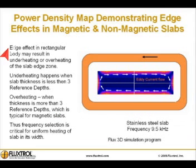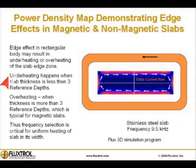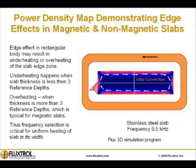Power density map demonstrating edge effects in magnetic and non-magnetic slabs. Edge effect in a rectangular body may result in under-heating or overheating of the slab edge zone. Under-heating happens when slab thickness is less than 3 reference depths, and overheating when thickness is more than 3 reference depths, which is typical for magnetic slabs.